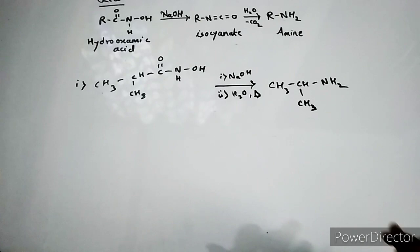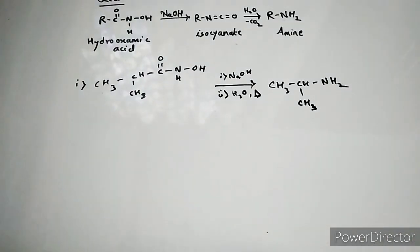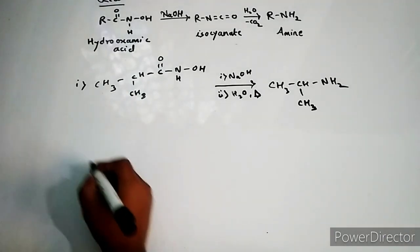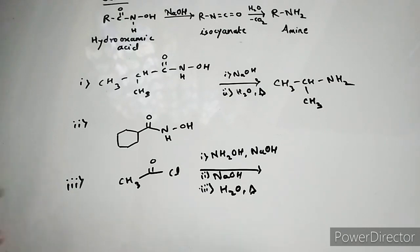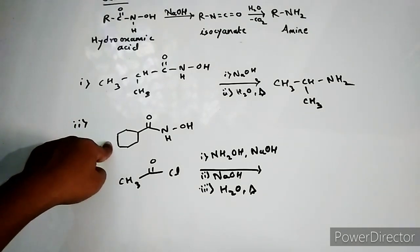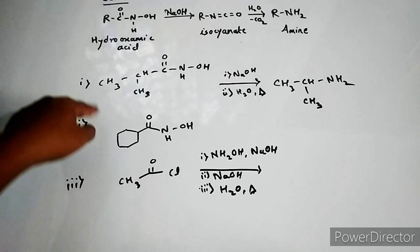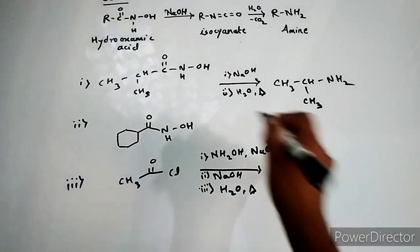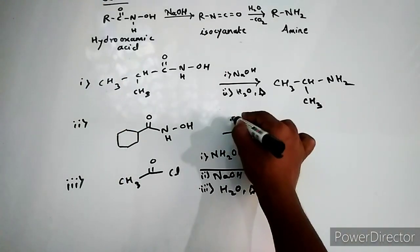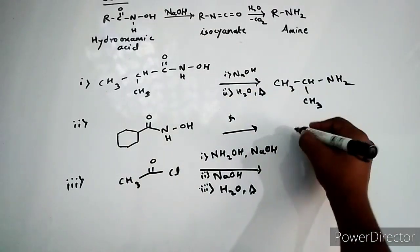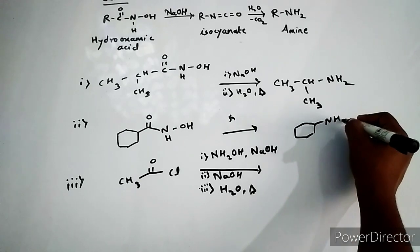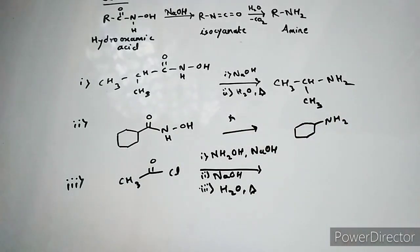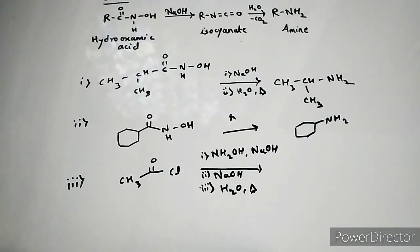For these basics you can refer to the standard 12 chemistry book. Now the next problem: the second one and third. The second problem is very much similar to the first one, so you can do it. I'll directly write its structure. Conditions are the same as the first one. You are going to get here cyclohexylamine. This is not aniline, it's cyclohexylamine.